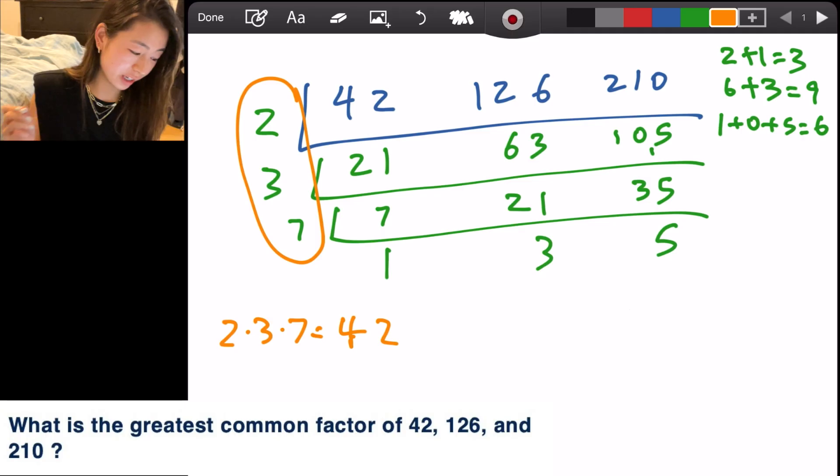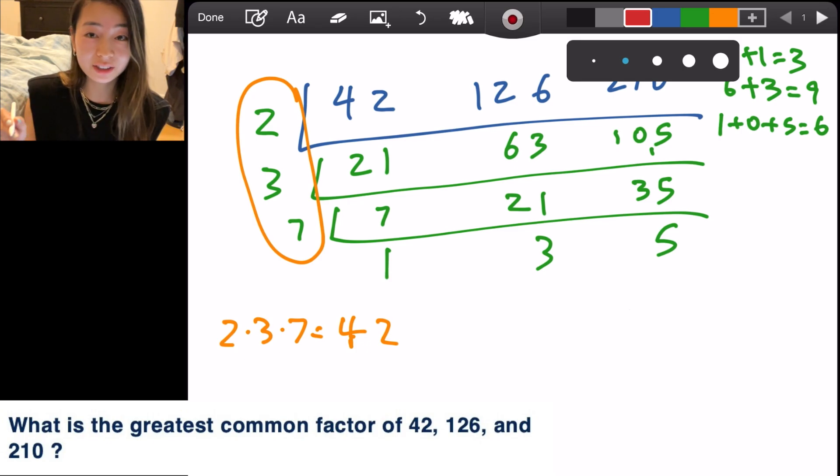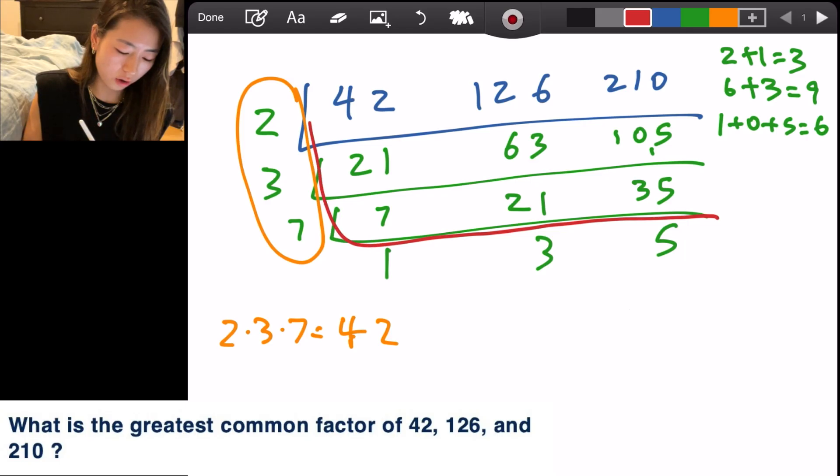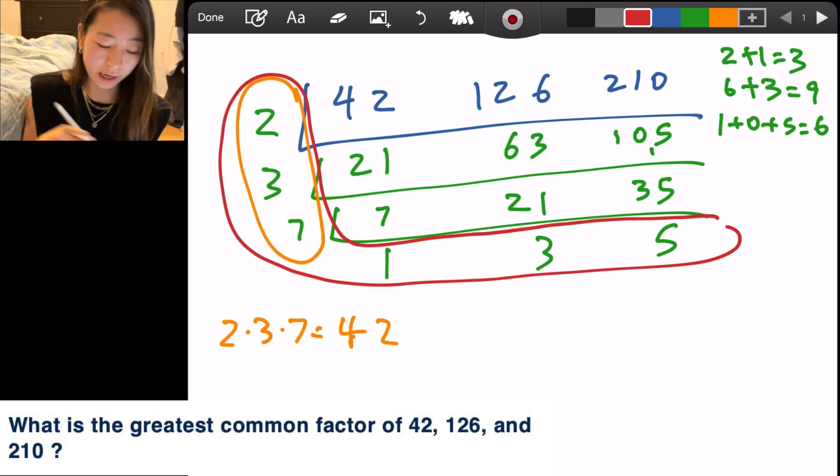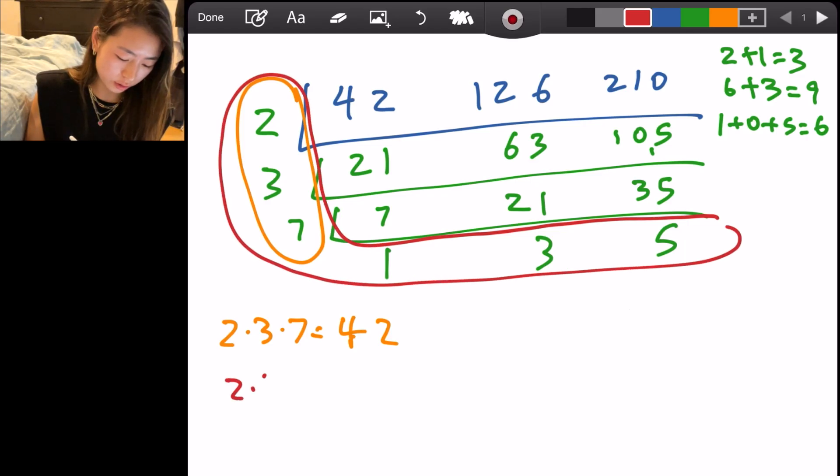So 2 times 3 times 7, so that is 42. And that is your answer. Super easy. But not only that, if the question was least common multiple instead, it's literally the same thing, but it's the product of all of these numbers outside of the big L. So 2 times 3 times 7 times 3 times 5.